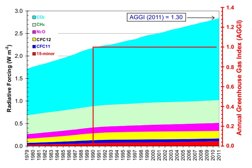Human activities since the beginning of the Industrial Revolution around 1750 have produced a 45% increase in the atmospheric concentration of carbon dioxide (CO2), from 280 ppm in 1750 to 406 ppm in early 2017. This increase has occurred despite the uptake of more than half of the emissions by various natural sinks involved in the carbon cycle.